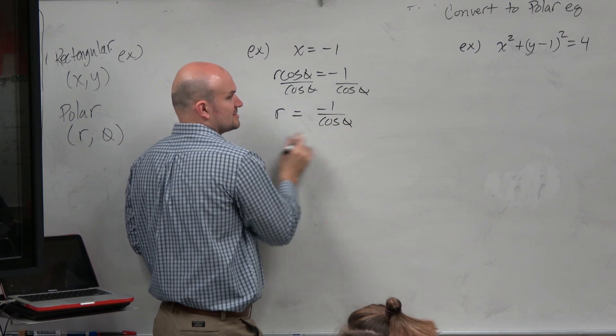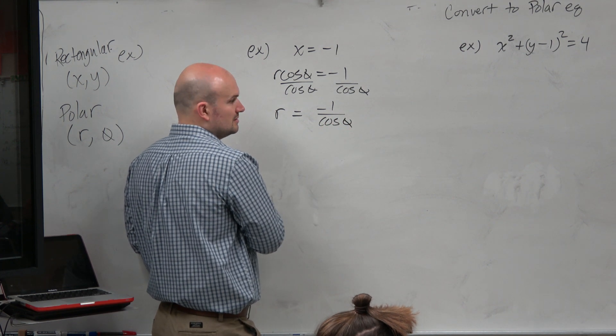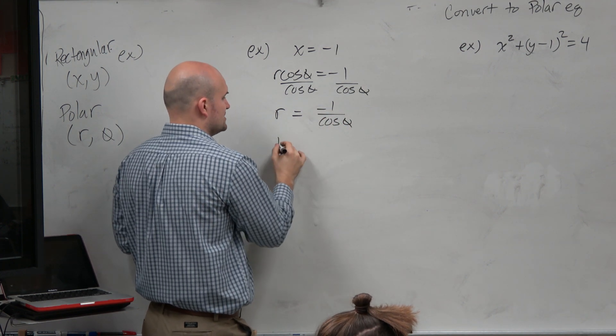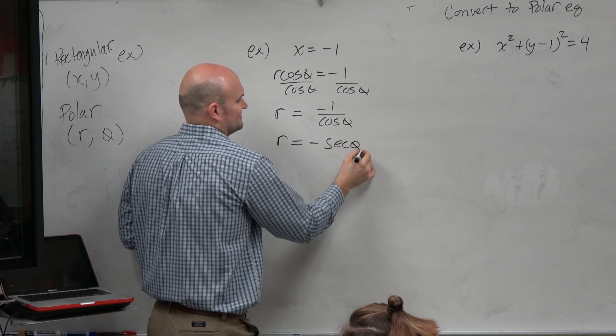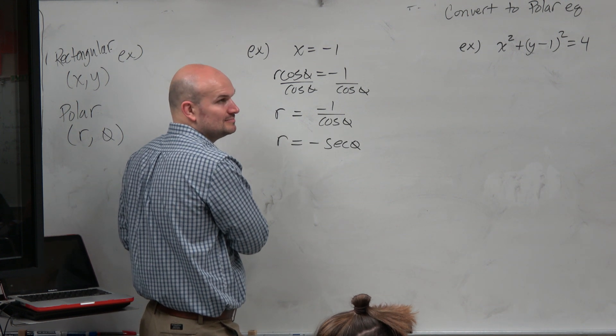But we probably wouldn't see it written like this. What is negative 1 over cosine of theta? What's another way of writing that? Secant. Secant. R equals negative secant of theta. OK?